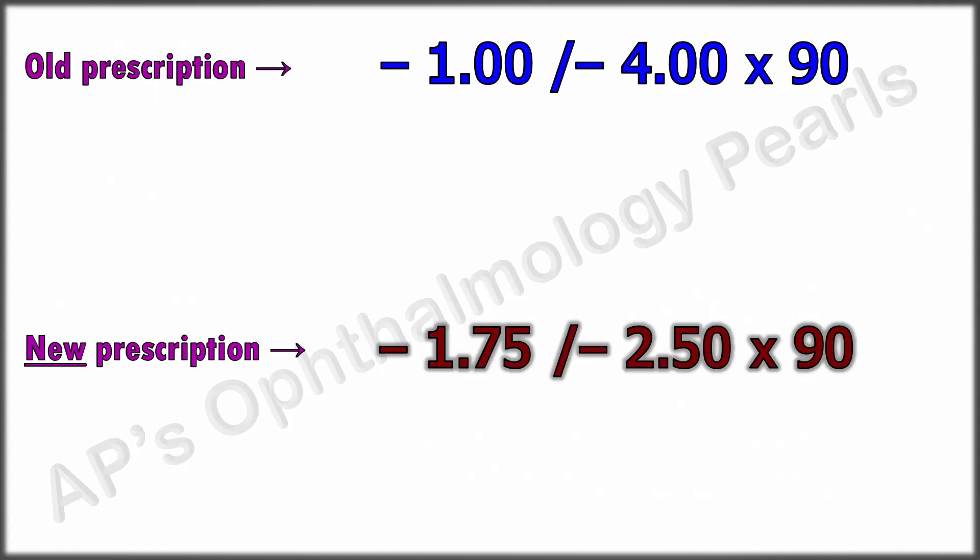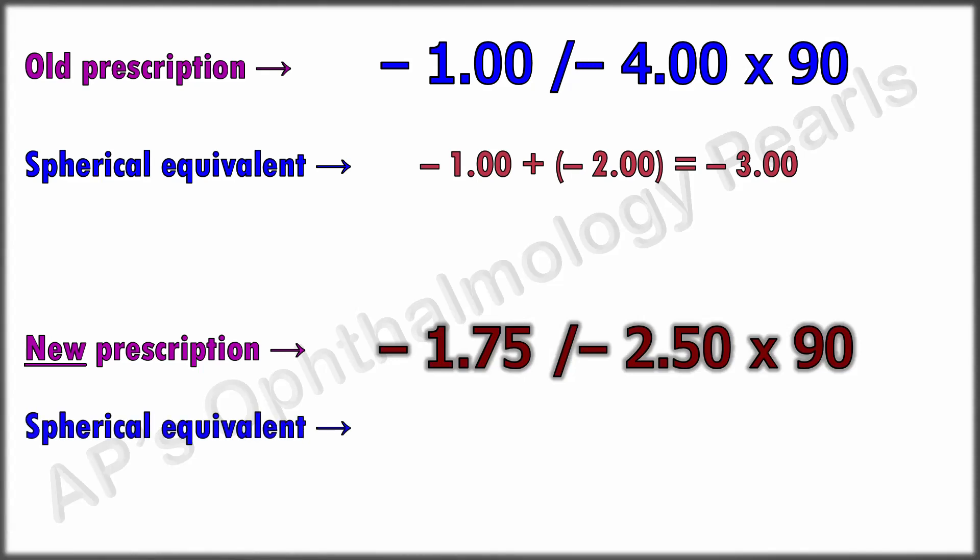Let us confirm by checking the spherical equivalents in both prescriptions. Here it is minus 1 plus half of minus 4, which equals minus 3. In the new prescription, it is minus 1.75 plus half of minus 2.5, which equals minus 3.